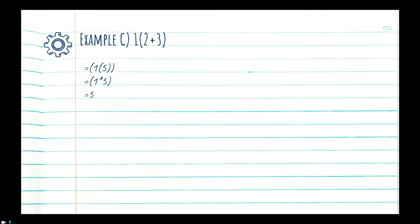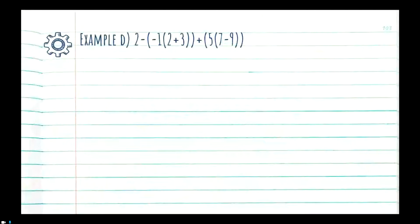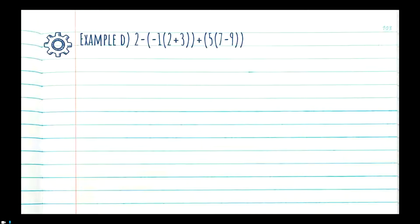Now this next equation looks complicated — there are a lot of brackets — but we're only solving one operation at a time. We start scanning and look for brackets. We see '2 minus' and there's a bracket. We look inside: is there any other bracket? We see 'negative 1' and then another bracket — yes, there is a child bracket. So we want to solve the child bracket first. We look inside the new bracket: 2 plus 3. No child brackets in there, so we can go ahead and solve it.